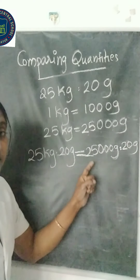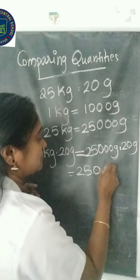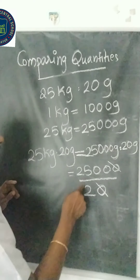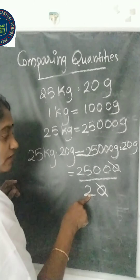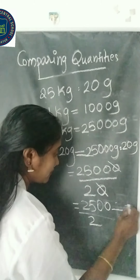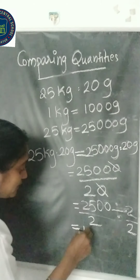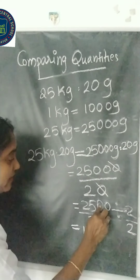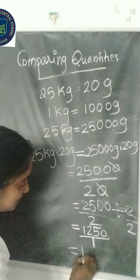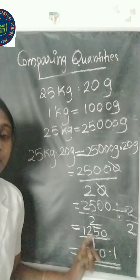Now we write this ratio in fraction form: 25,000 divided by 20. We cancel the two zeros to get 2500 divided by 2. Dividing 2500 by 2 gives us 1250. So our answer is 1250 is to 1. This is the required ratio.